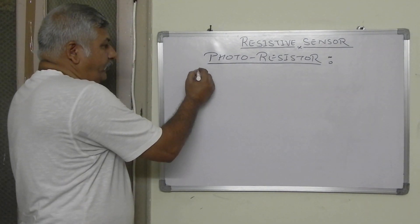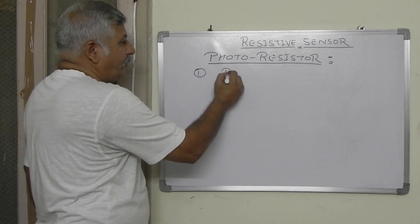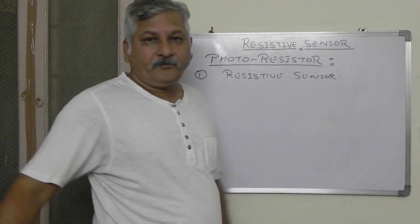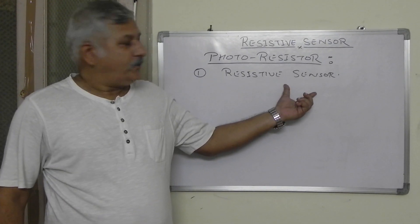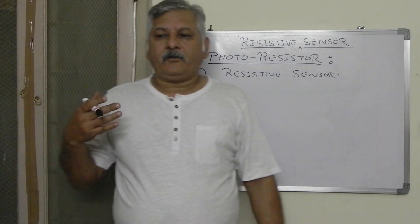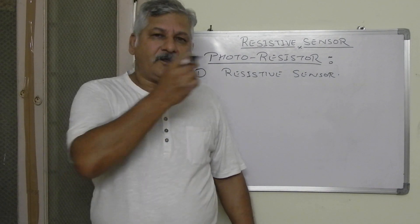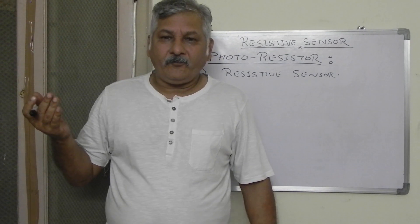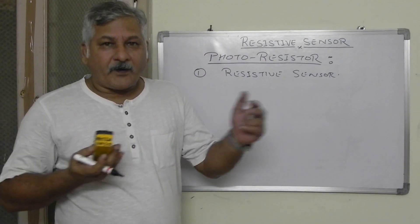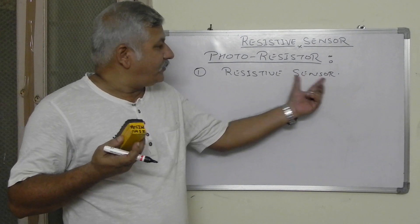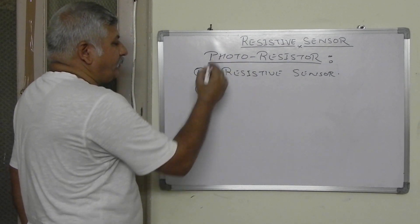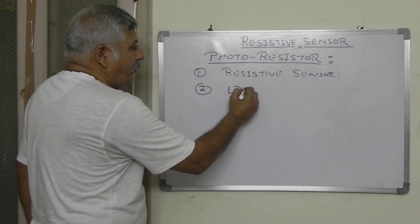The first point: a photoresistor is a resistive sensor because its resistance varies with brightness. If it is dark, this device will have some resistance. During the daytime when brightness is more, this device will have a different resistance. So changing the brightness, the resistance of this device varies. This photoresistor is also called an LDR.